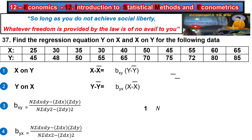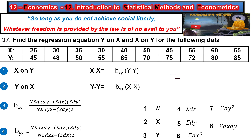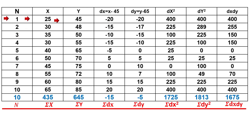We will plot the table with the following columns: 1st column — number of data (n value); 2nd column — x value; 3rd column — y value; 4th column — dx value; 5th column — dy value; 6th column — dx squared; 7th column — dy squared; 8th column — dx·dy.